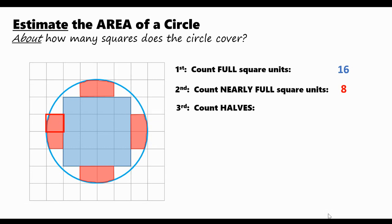Last, we'll count halves. Take a look at this region of the circle. The shaded region shows about half of a square unit. If I can find another portion of the circle that also looks like it's about half of a square unit, we can put the two halves together to create one whole square unit.